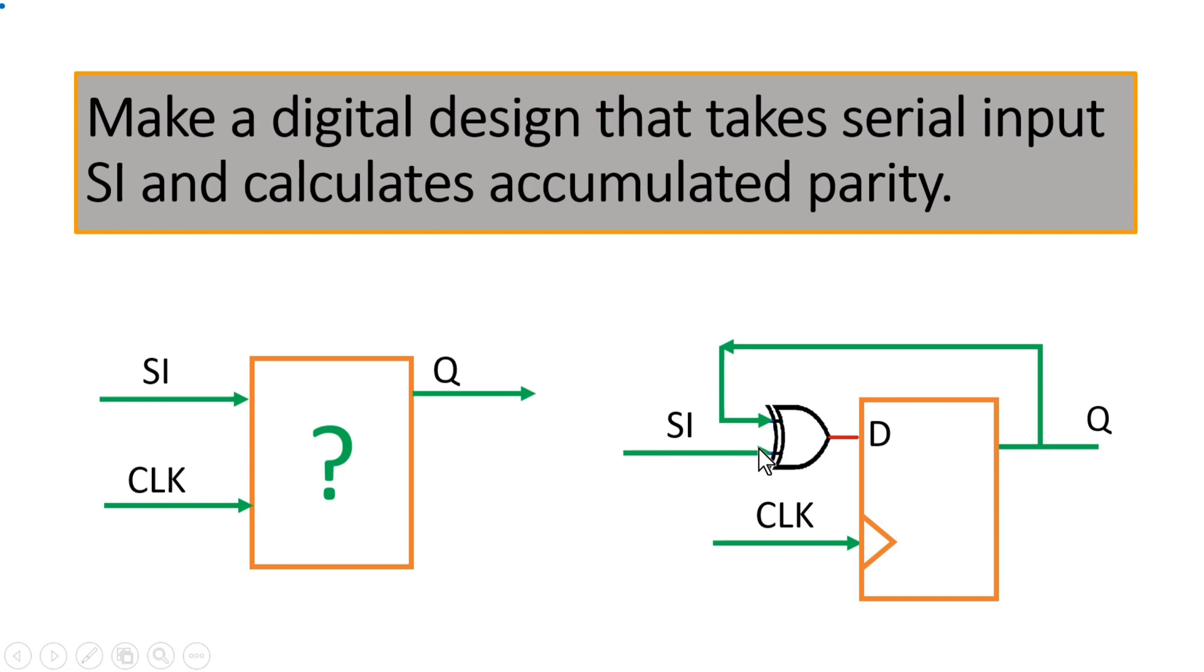So let us see how. Let us assume that Q is initially zero and on signal SI the signal is high. So zero and one - the output of XOR gate will become one, so this one will be passed to Q. Because only one bit has passed now, Q is high. Let us assume that SI is again high and this Q is also high.